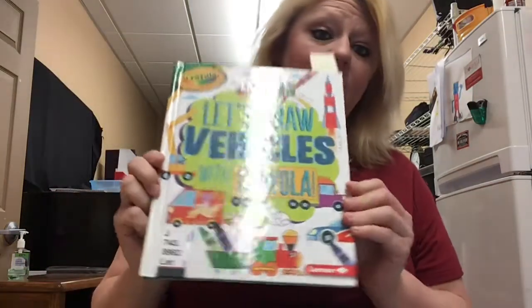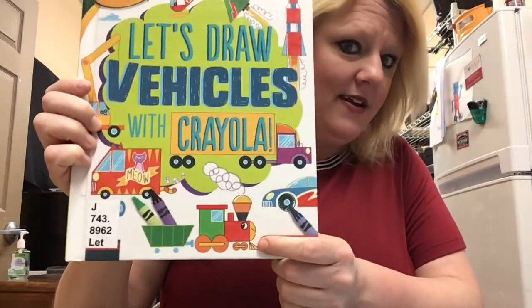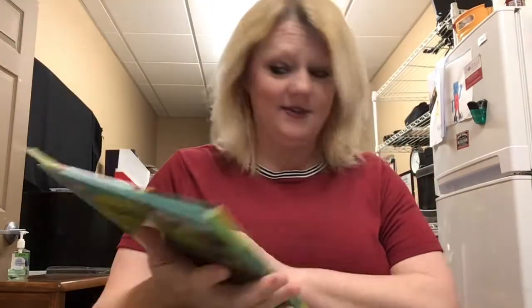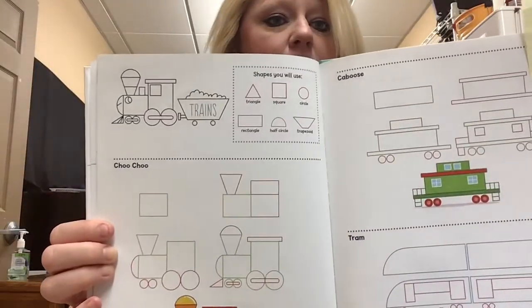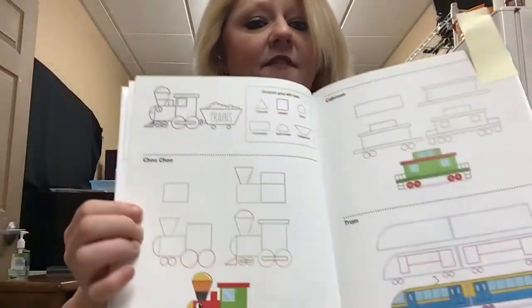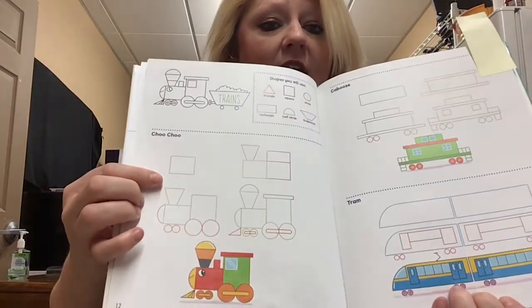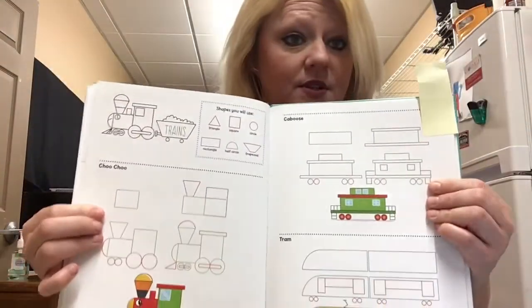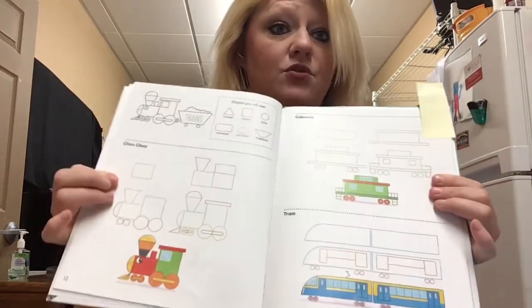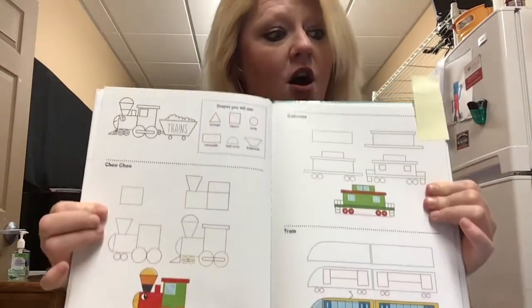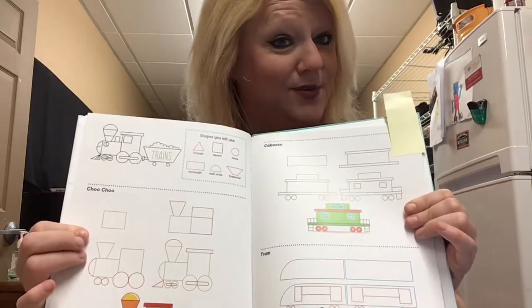I found this book in the library and I noticed that it had a train on the very front. So I looked inside and it has a step-by-step guide of how to draw an engine and a caboose. So all we would have to figure out is how to draw another car. I thought we could do a coal car.